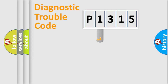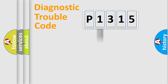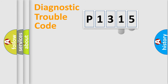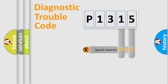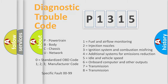This distribution is defined in the first character of the code. If the second character is expressed as zero, it is a standardized error. In the case of numbers 1, 2, or 3, it is a more specific car-manufacturer error. The third character specifies a subset of errors. This distribution is valid only for the standardized DTC code, and only the last two characters define the specific fault of the group.